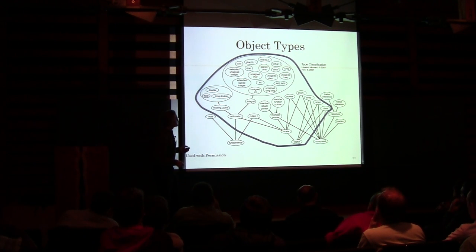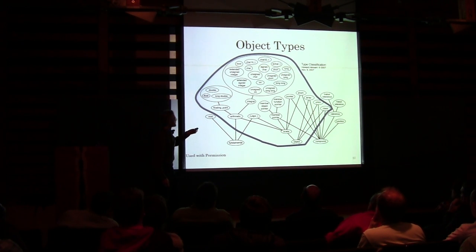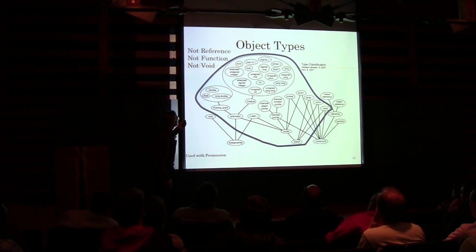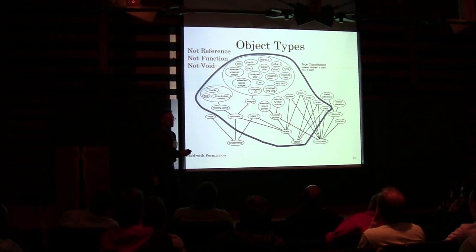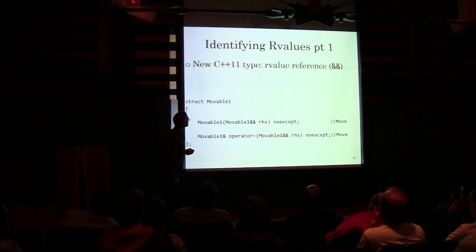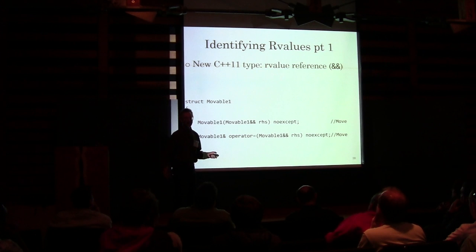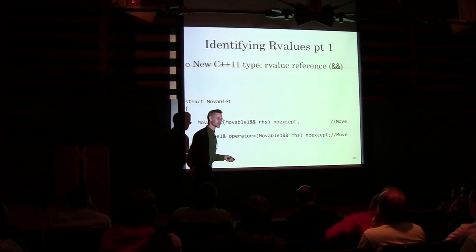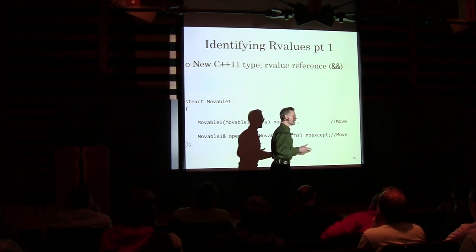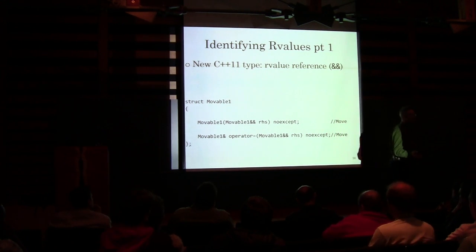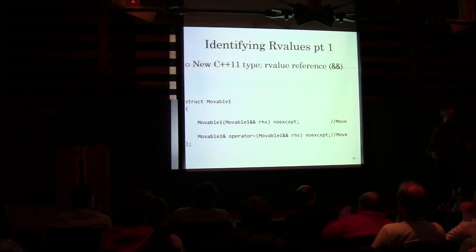This is a picture I got from Howard Hinnant that shows all of the things that are object types. In particular, reference, function, and void are not object types, so none of those will be R-values. Now that we're going to do this stuff — the reason we're talking about R-values is we're going to steal from them — this is getting back to what kinds of things can you go mangle without destroying the program.